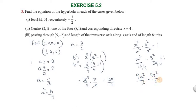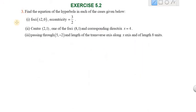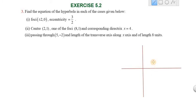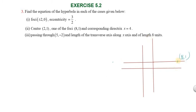Second subdivision: center (2, 1), one of the foci (8, 1), and corresponding directrix x = 4. So on the X and Y axes, we plot: center at (2, 1), one focus at (8, 1) and the other at (−8, 1). The directrix is the line x = 4.